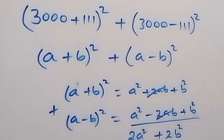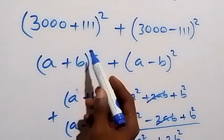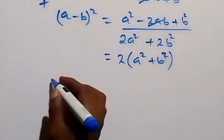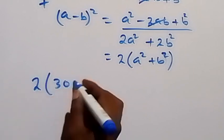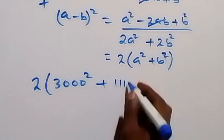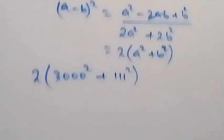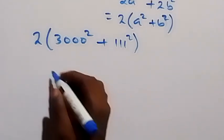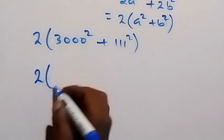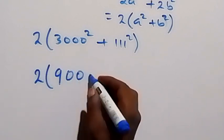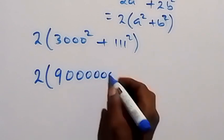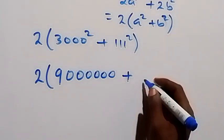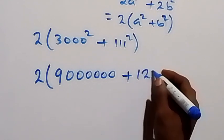So the expression can be written as 2 times bracket a squared plus b squared, where a is 3000 and b is 111. Therefore, this can be written as 2 times bracket 3000 squared, which gives us 9 million, plus 111 times 111, which equals 12,321.